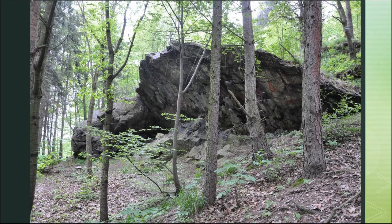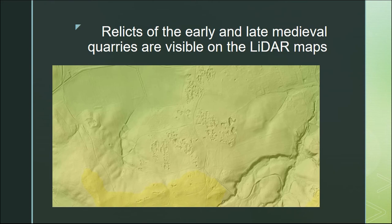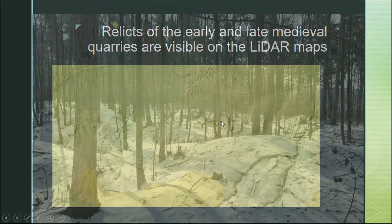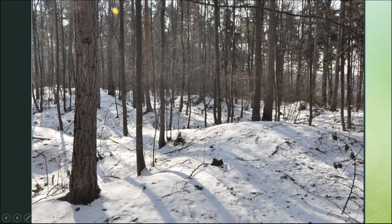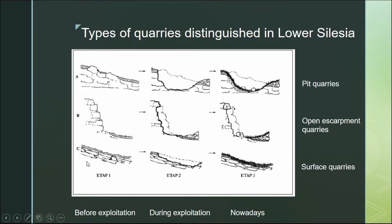This site is dated back to the 12th, 13th, and 14th centuries. We also have very early medieval quarries from the 5th, 6th, and 8th centuries. They group into very small areas and represent this type of pit quarry. Due to field studies we distinguished several types of quarries in the Sudetes.